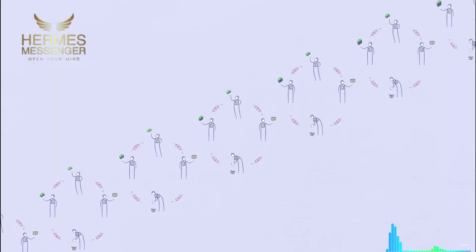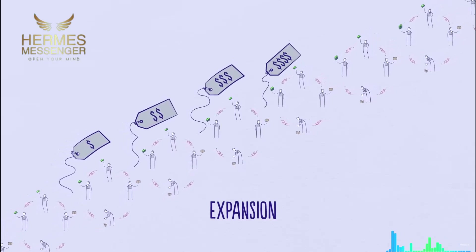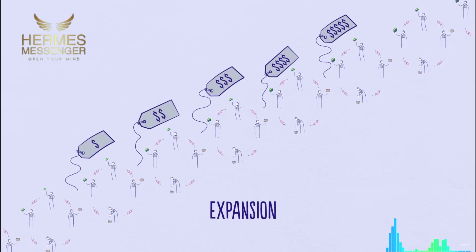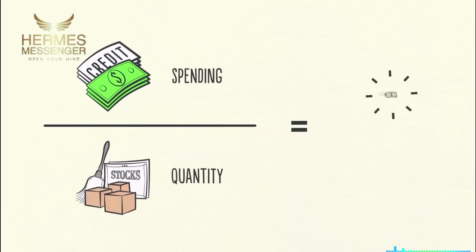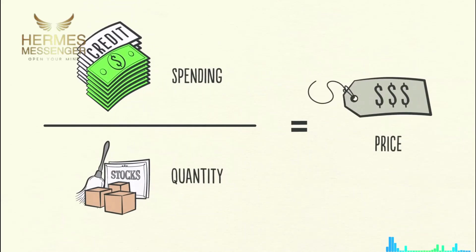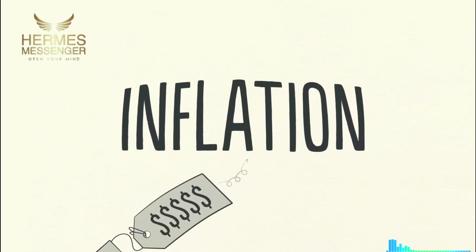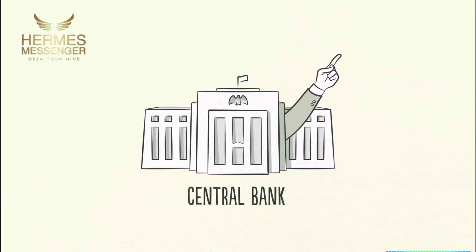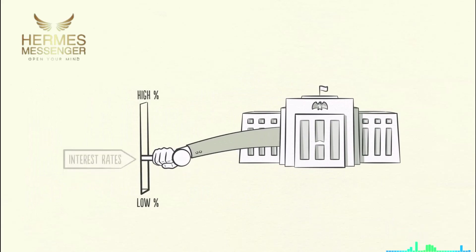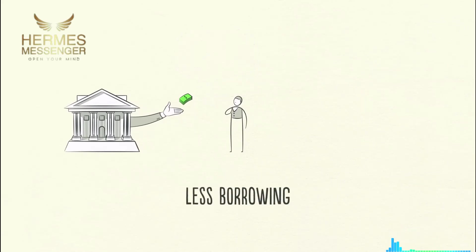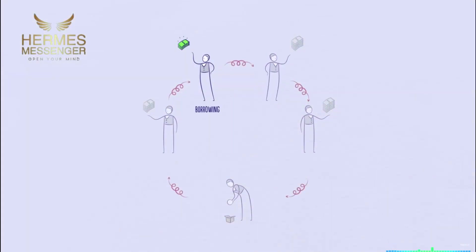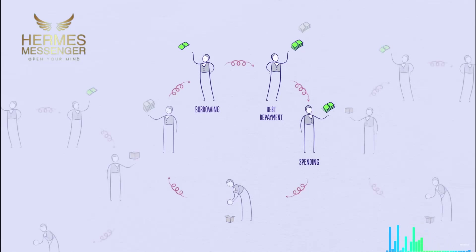As economic activity increases, we see an expansion — the first phase of the short-term debt cycle. Spending continues to increase and prices start to rise. This happens because the increase in spending is fueled by credit, which can be created instantly out of thin air. When the amount of spending and incomes grow faster than the production of goods, prices rise. When prices rise, we call this inflation. The central bank doesn't want too much inflation because it causes problems. Seeing prices rise, it raises interest rates. With higher interest rates, fewer people can afford to borrow money, and the cost of existing debts rises. Because people borrow less and have higher debt repayments, they have less money left over to spend, so spending slows. And since one person's spending is another person's income, incomes drop.